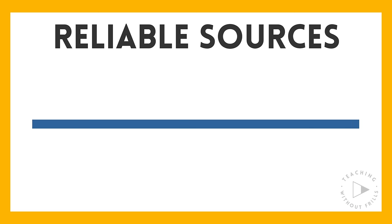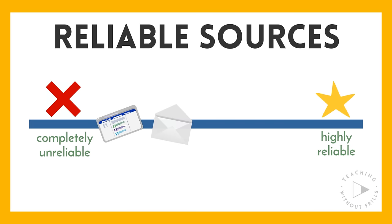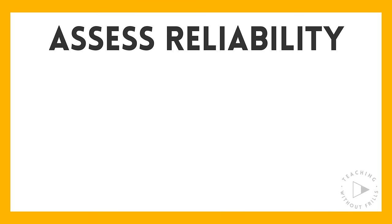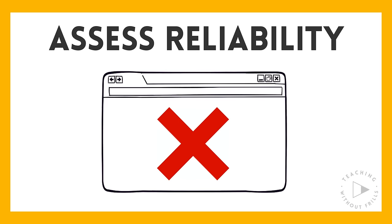It can be difficult to determine the reliability of a source because sources can fall within a range of reliability. Some sources are completely unreliable and others are highly reliable, but there are many sources that fall somewhere in between. There are a few ways you can assess the reliability of a source to determine how you should use it in your research, or if you should use it at all.